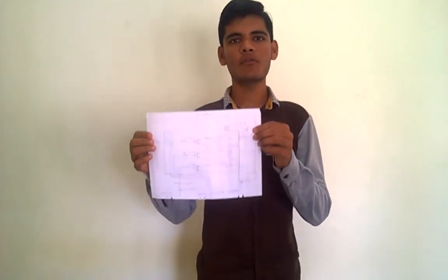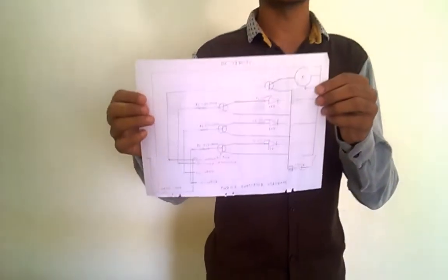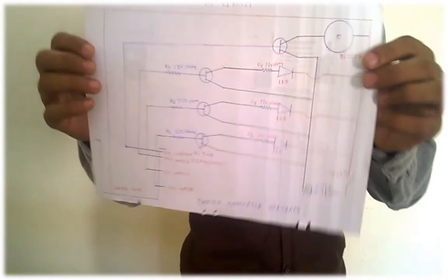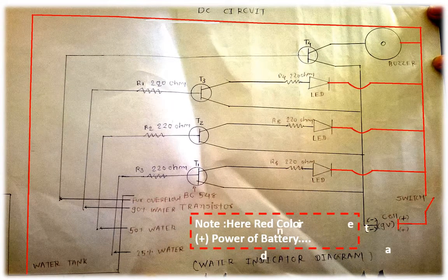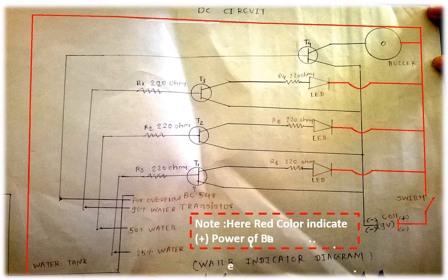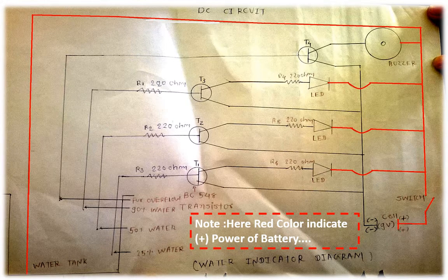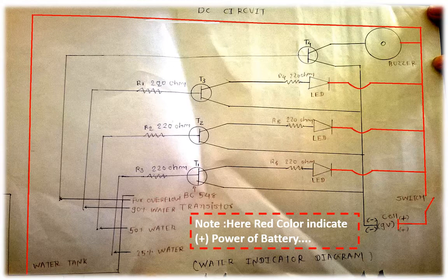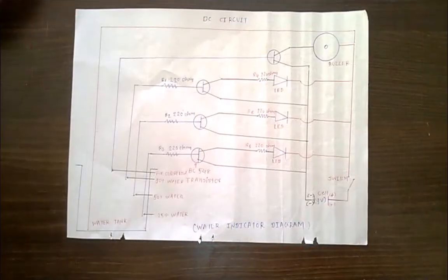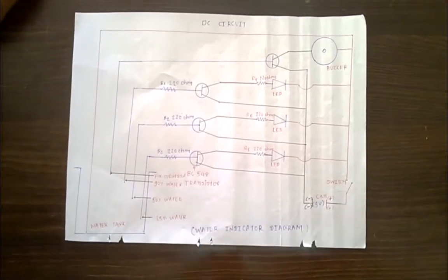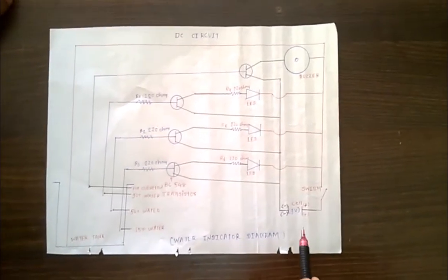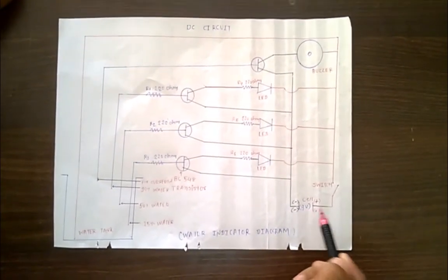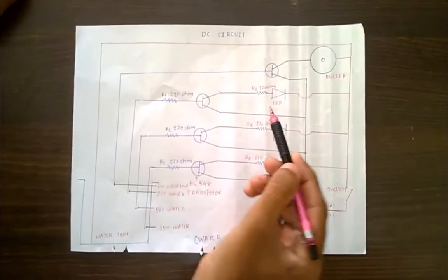This is a diagram for the water level indicator. We saw the diagram, and the instruments are battery, buzzer, LED, resistance, transistor, and water tank.